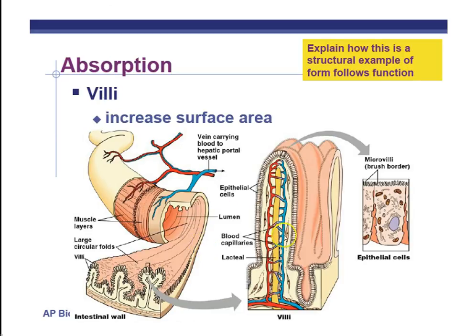Now, the one exception is fats. Fats don't go directly from your intestines into your bloodstream like most things — like sugars, nucleic acids broken down into nucleotides, and amino acids broken down from proteins. The fats will enter your lymphatic system. The lymphatic system is a secondary set of tubes that returns fluid back to your circulatory system. Fats will enter the lymphatic system first, and then, in a long pathway, be taken to the circulatory system.